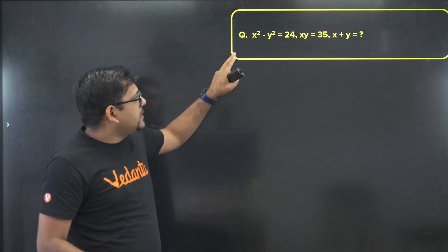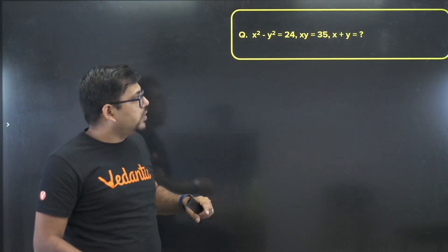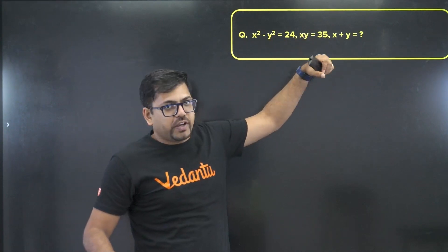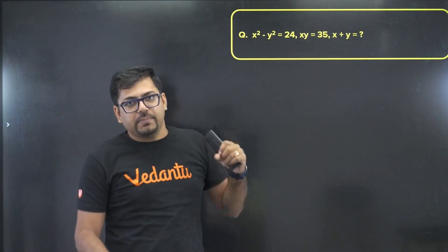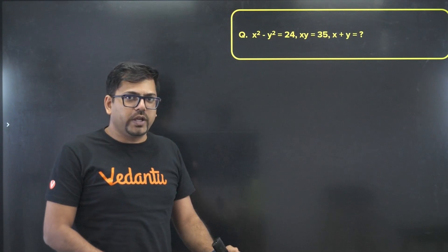We have x² minus y² equals 24, and we have x times y equals 35, and we have to find the value of x plus y. Generally what we do is assume some value of x plus y, then do the squaring on both sides and put in the values to get the answer.